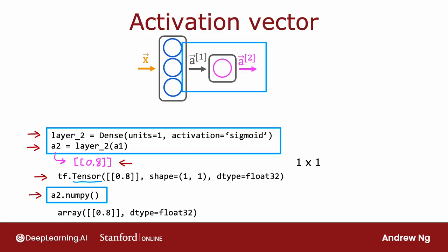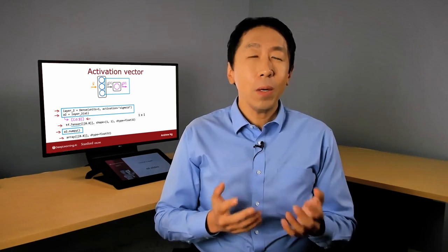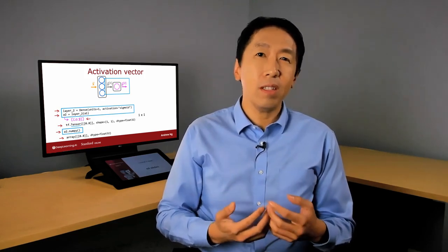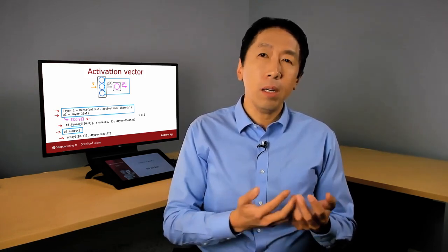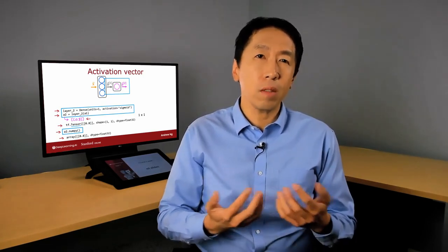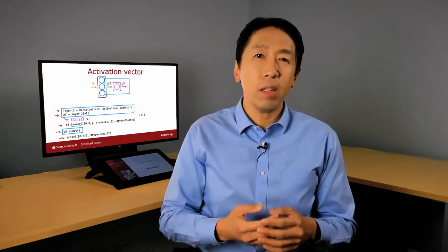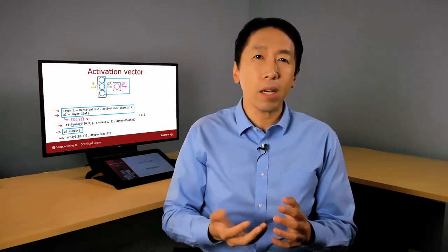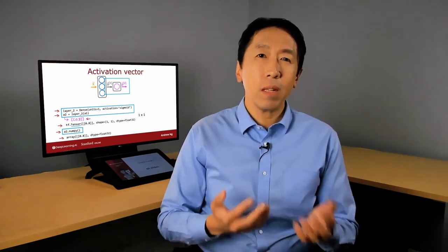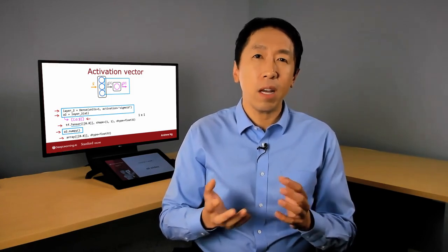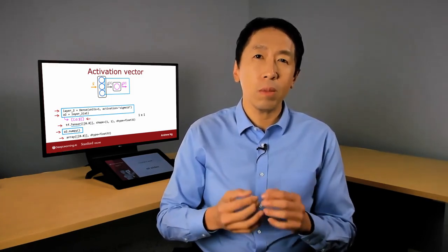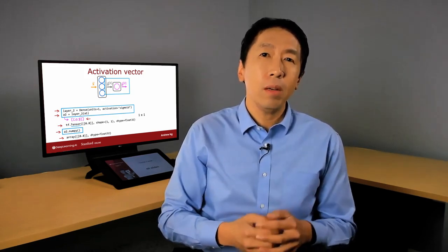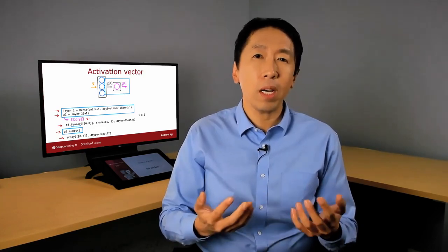Once again, you can convert from a TensorFlow tensor to a NumPy matrix using A2.numpy. And that will turn this back into a NumPy array that looks like this. So that hopefully gives you a sense of how data is represented in TensorFlow and in NumPy. I'm used to loading data and manipulating data in NumPy. But when you pass a NumPy array into TensorFlow, TensorFlow likes to convert it to its own internal format, the tensor, and then operate efficiently using tensors. And when you read the data back out, you can keep it as a tensor or convert it back to a NumPy array. I think it's a bit unfortunate that the history of how these libraries evolved has let us have to do this extra conversion work when actually the two libraries can work quite well together. But when you convert back and forth, whether you're using a NumPy array or a tensor, it's just something to be aware of when you're writing code.